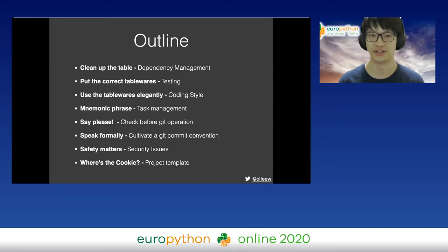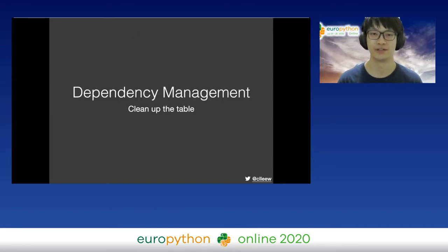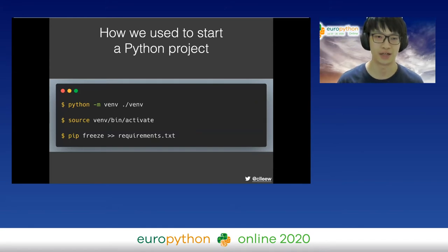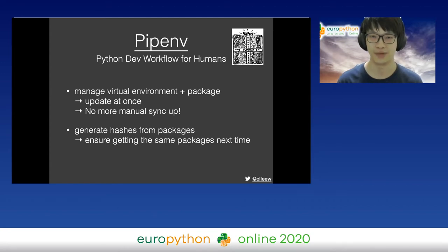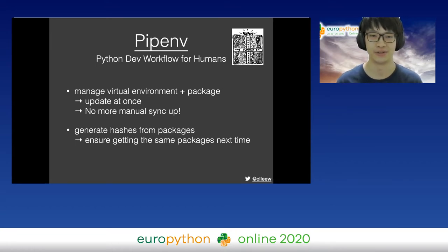When we have our knife to cut the cookie, we'll ensure our own safety. And the last step: we'll see the cookie. Starting from dependency management — this might be how we used to start a Python project: we create a virtual environment, activate it, and then pip-freeze some packages into requirements.txt. But sometimes we forget to activate the virtual environment, or we forget to add the package to requirements.txt. So we can use tools like pipenv, because pipenv can manage your virtual environment and packaging at the same time.